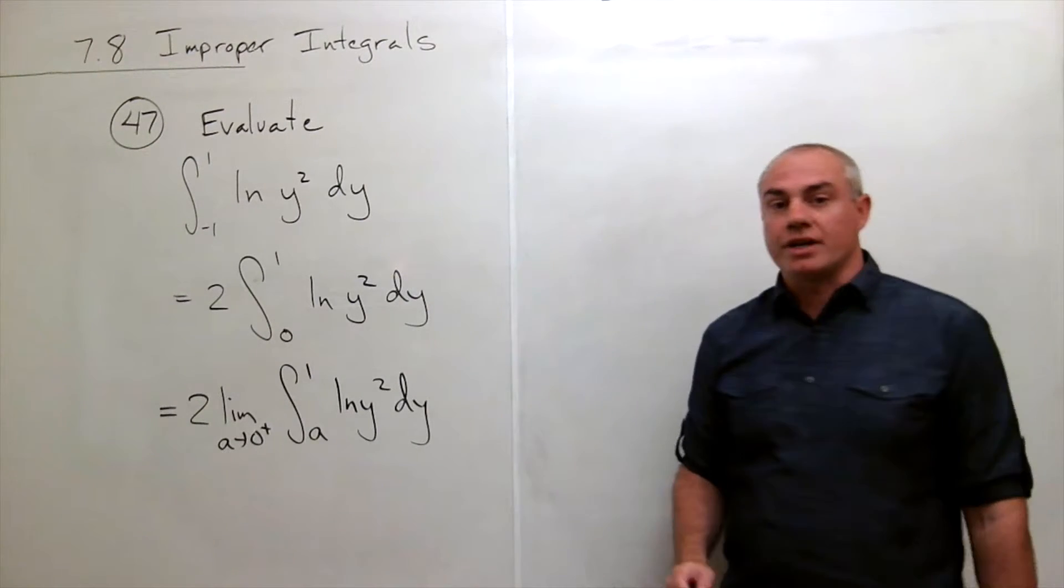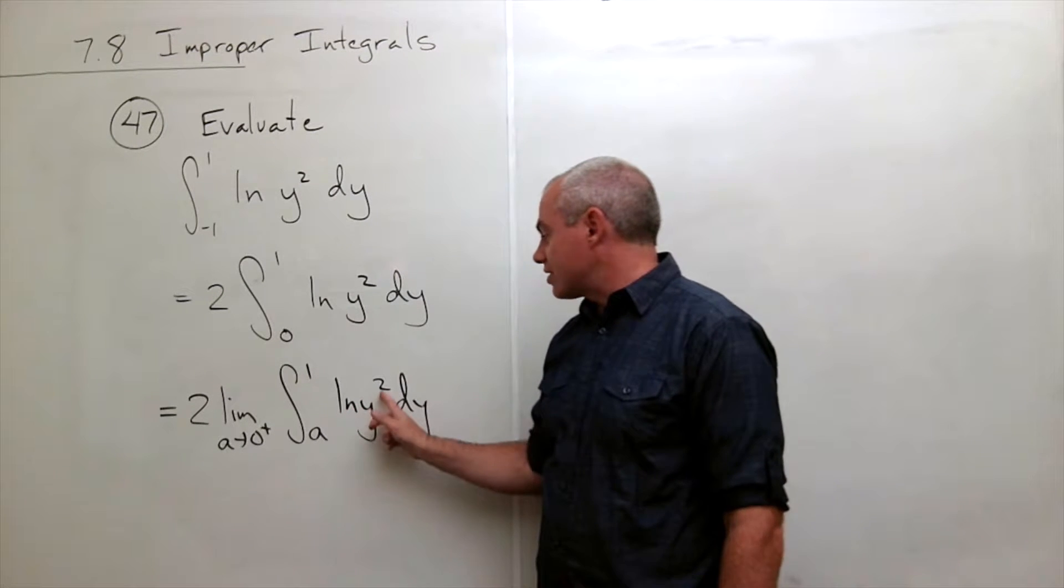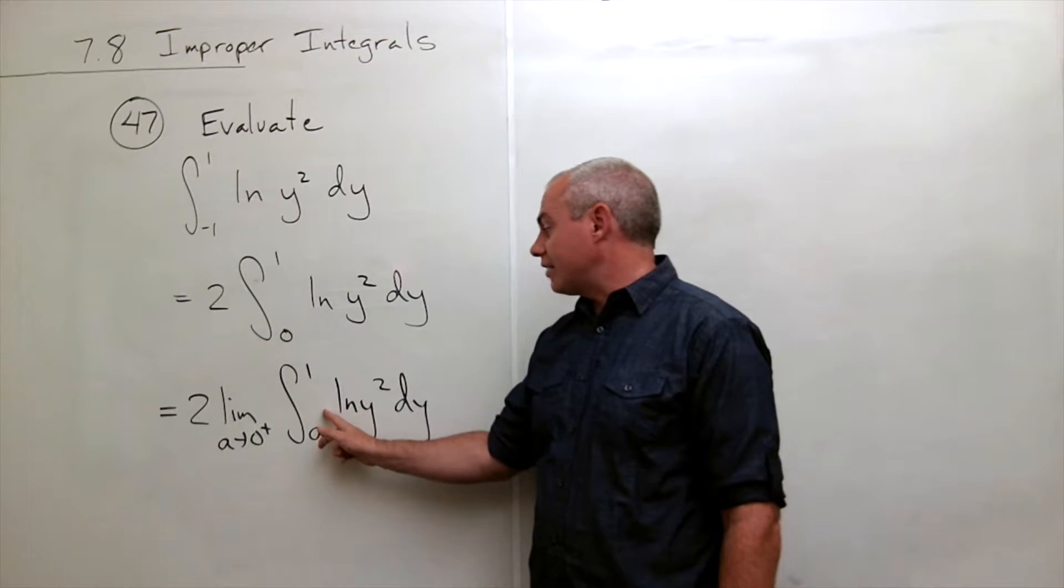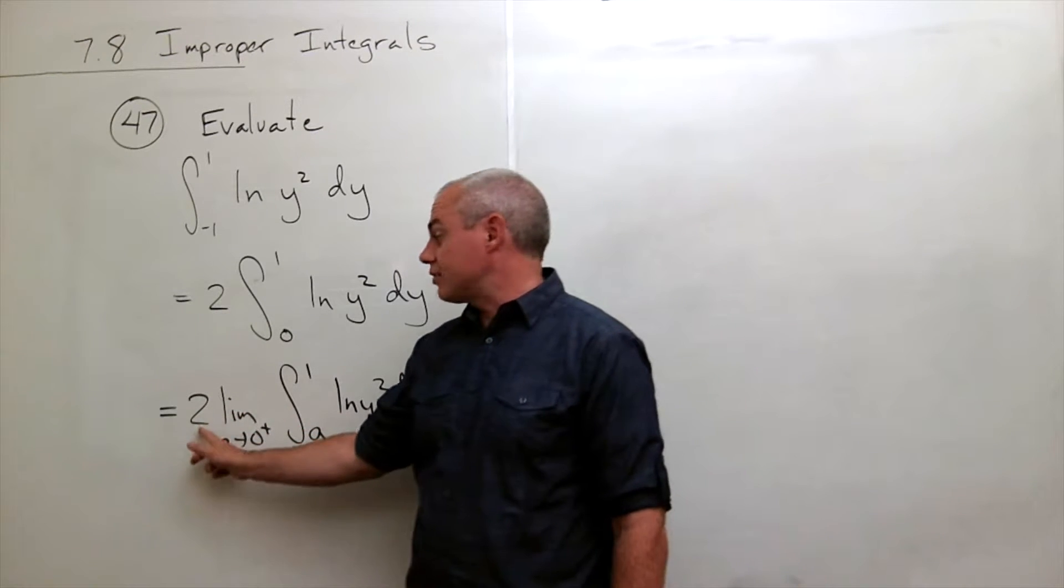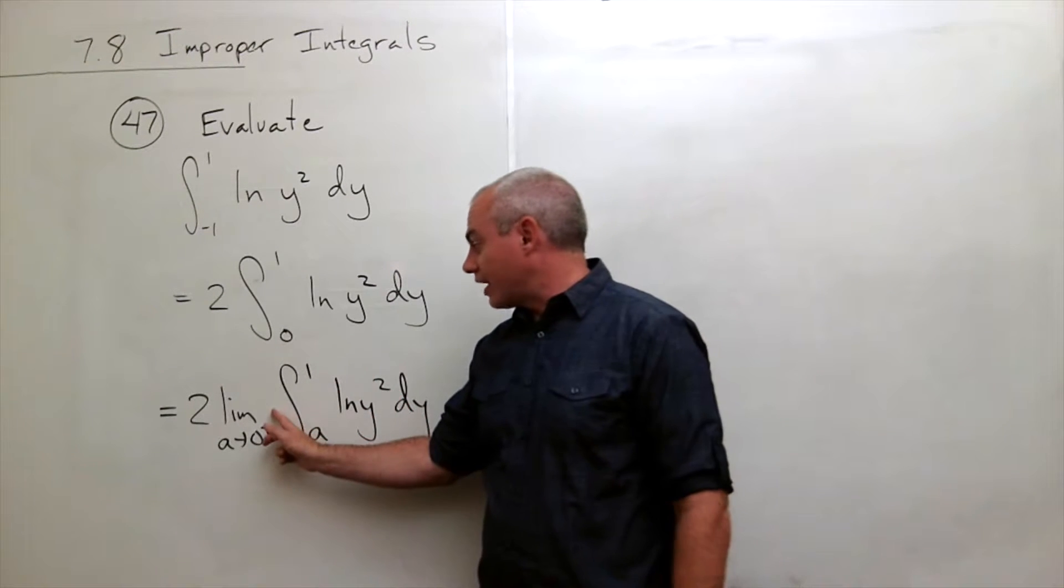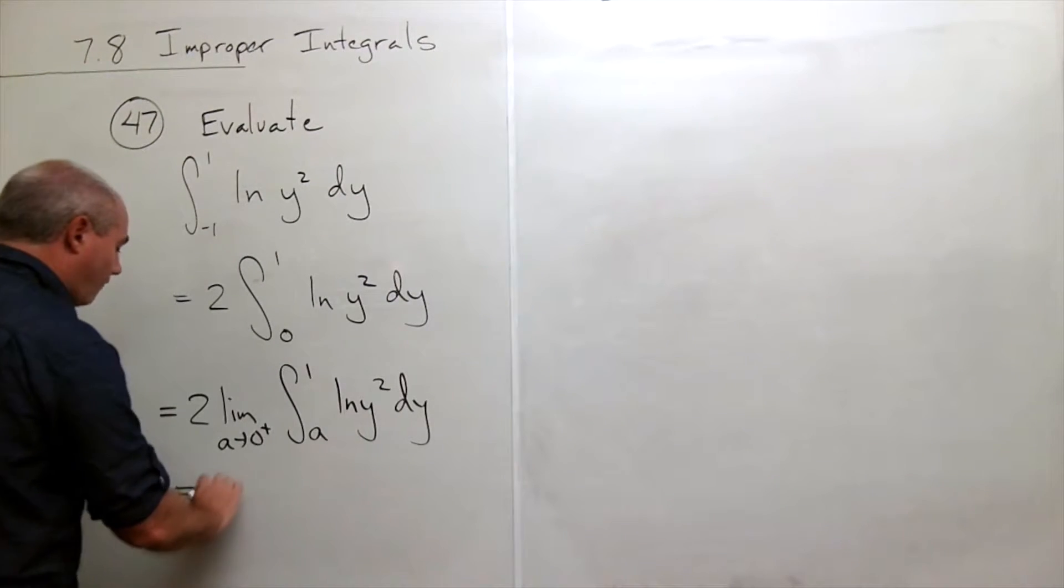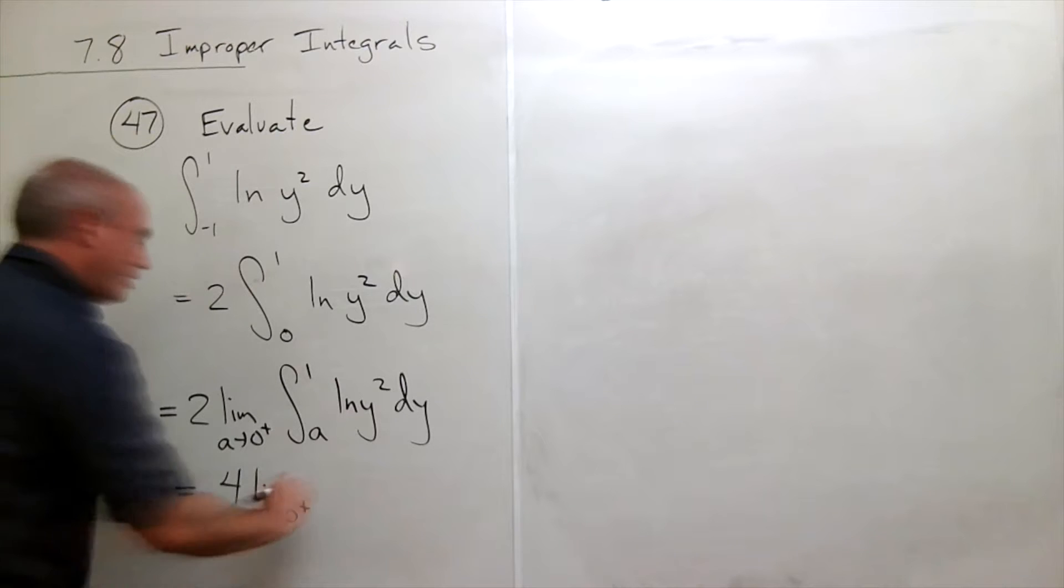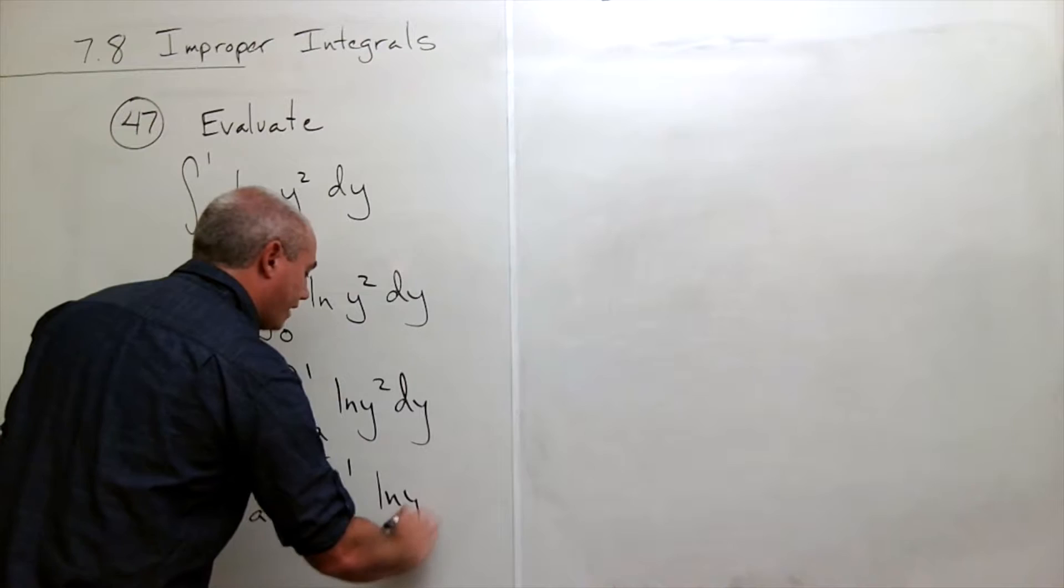Now something I want you to notice is that because of the power rule of logarithms, I have ln of y². That 2 could come down in front of the natural log. If it comes down in front of the natural log, I could bring it through the integral. And constants pass through limits so I could bring it all the way outside completely. Let's bring the 2 down, bring it outside the integral, bring it outside the limit. And now we just have 4 times the limit as a goes to 0 from the right of the integral from a to 1 of ln y dy.